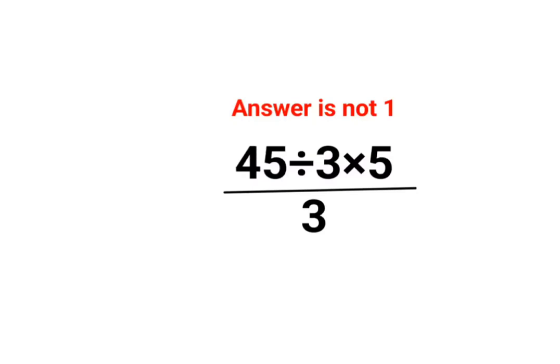Welcome everyone. A lot of people thought that the answer for this one is 1 and it is quite obvious, right? See, 45 divided by 3 multiplied by 5. So they thought this is so easy.